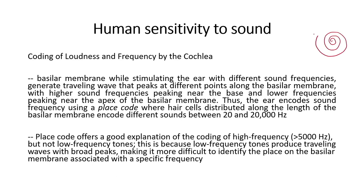The cochlea has three layers, and the inner layer is called the basilar membrane. Sound passes through the auditory canal, hits the eardrum which vibrates accordingly, and this vibration is transferred to the inner ear through the oval window as a travelling wave in the liquid filling the cochlea. The liquid is centred around the basilar membrane, so all interpretations relating to loudness and frequency happen at the level of the basilar membrane.